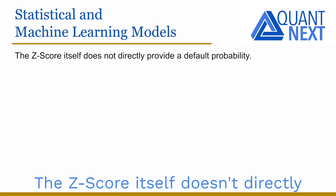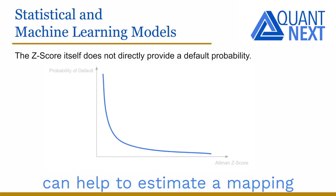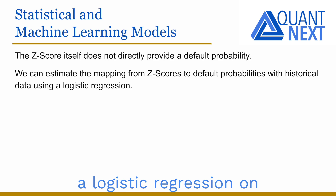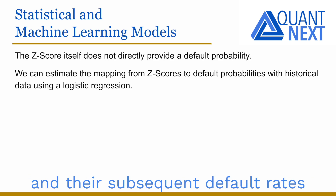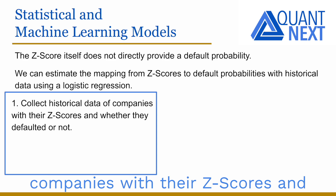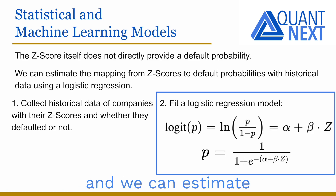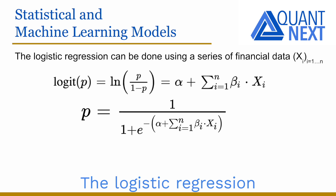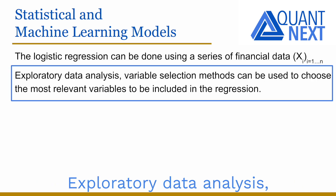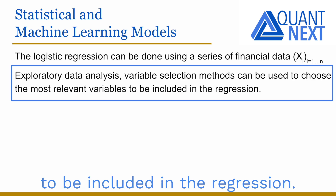The Z-score itself doesn't directly provide a default probability. Empirical studies and historical data can help estimate a mapping from Z-scores to default probabilities. One approach is to use a logistic regression on historical data of companies' Z-scores and their subsequent default rates to estimate the probability of default. First, we collect historical data of companies with their Z-scores and whether they defaulted or not. Then we fit a logistic regression model to estimate the default probability. The logistic regression can also be performed using a series of financial data, with exploratory data analysis and variable selection methods used to choose the most relevant variables.